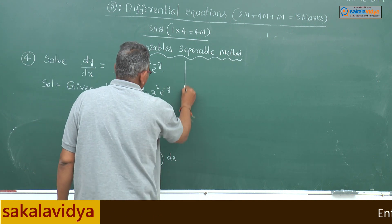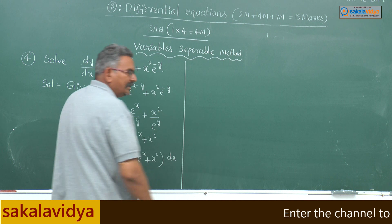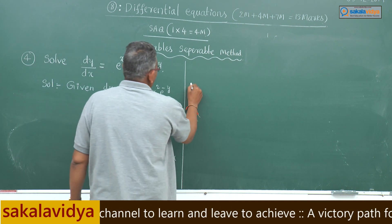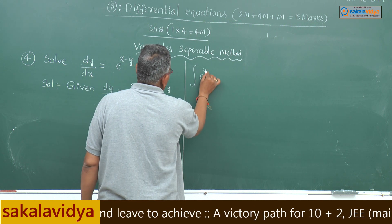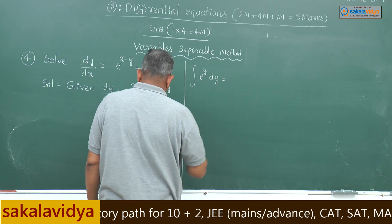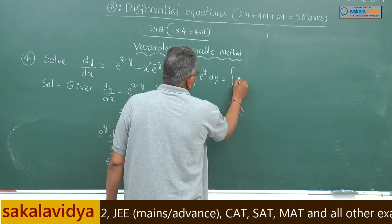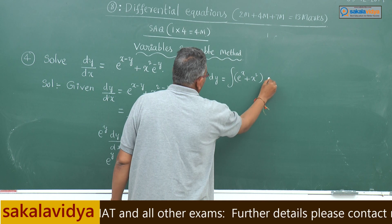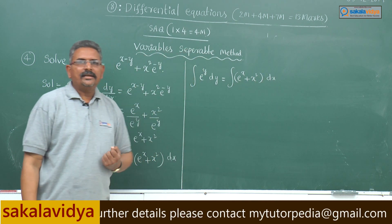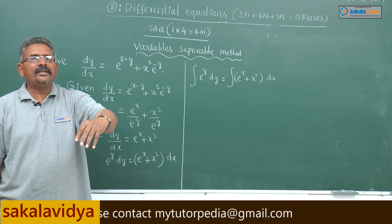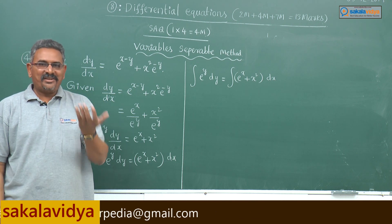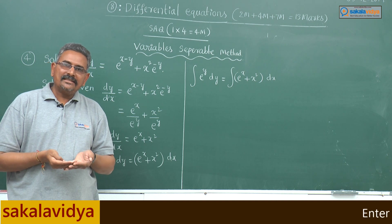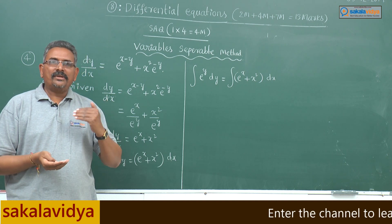If you integrate on both sides you get the required solution for the given differential equation. So now, integral of e^y dy equals integral of e^x plus x squared dx. It is very simple. We need the integral of x^n dx formula and the integral of e^x dx, which is e^x. Integral of x^n dx is x^(n+1) by (n+1).